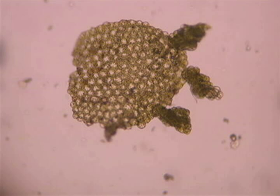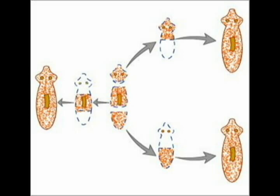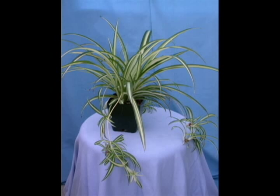Fragmentation is the form of asexual reproduction where a new organism grows from a fragment of the parent. Each fragment develops into a mature, fully grown individual. Fragmentation is seen in many organisms such as fungi and plants.